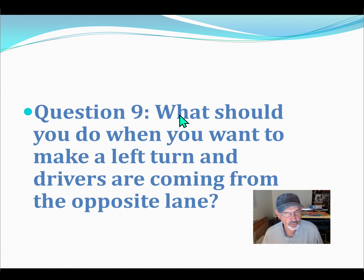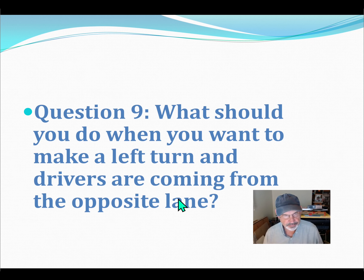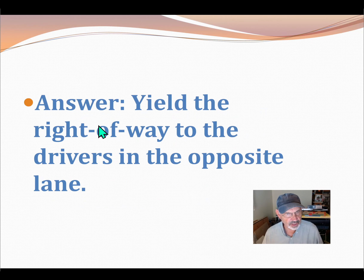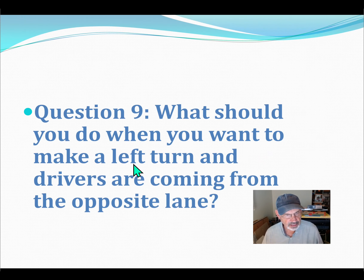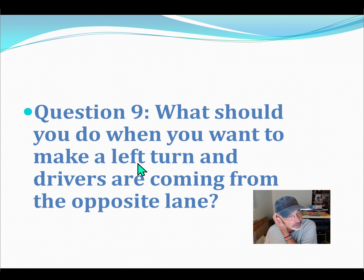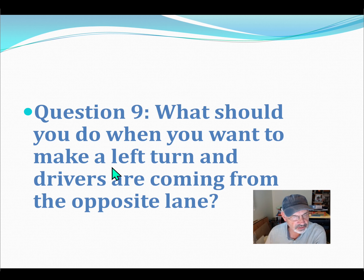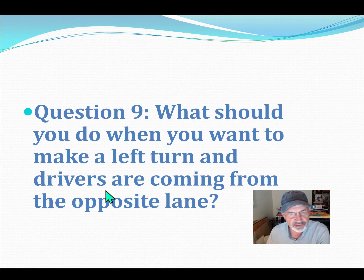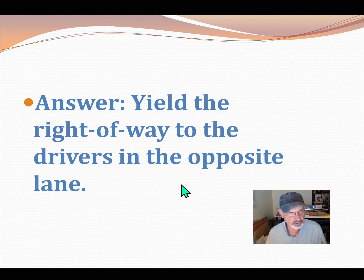Question 9: What should you do when you want to make a left turn and drivers are coming from the opposite lane? Answer: Yield the right of way to the drivers in the opposite lane. If you are making a left turn and drivers are coming from the opposite lane, you need to yield to them. You need to stop and allow them to continue — you just can't be driving in front of cars coming from the opposite lane.